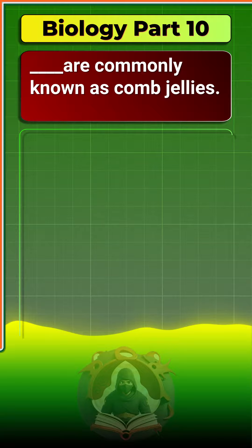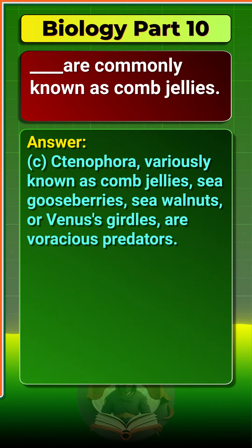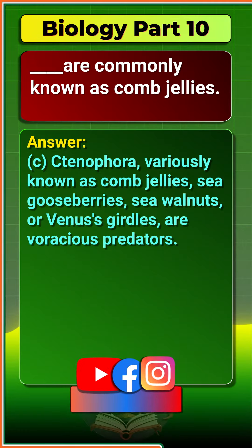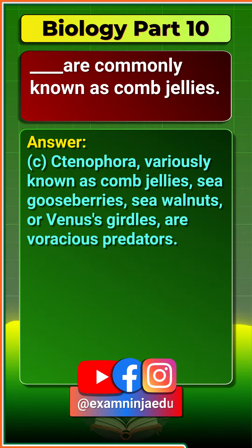The answer is Option C: Tenophora. Variously known as comb jellies, sea gooseberries, sea walnuts, or Venus's girdles, they are voracious predators.